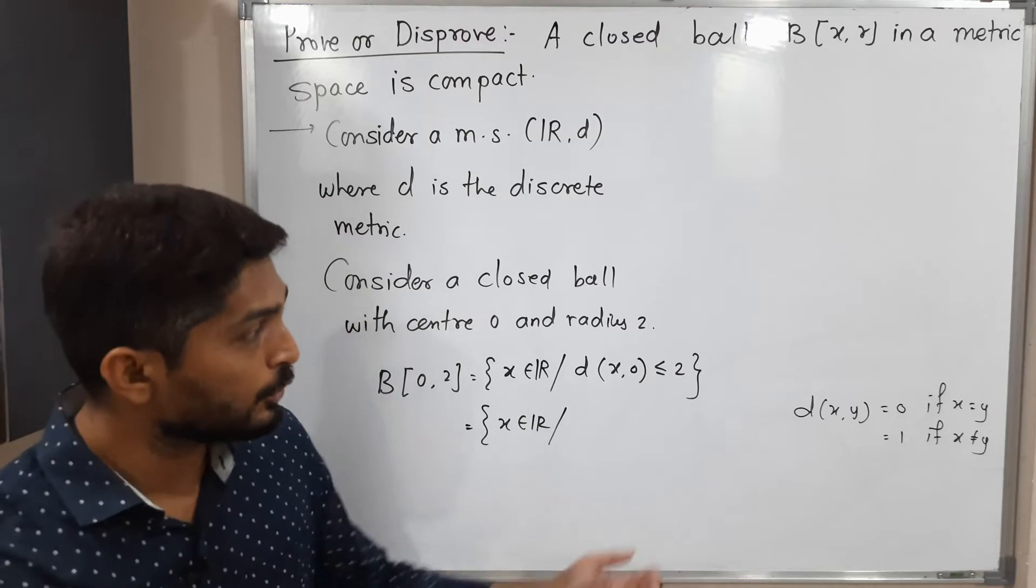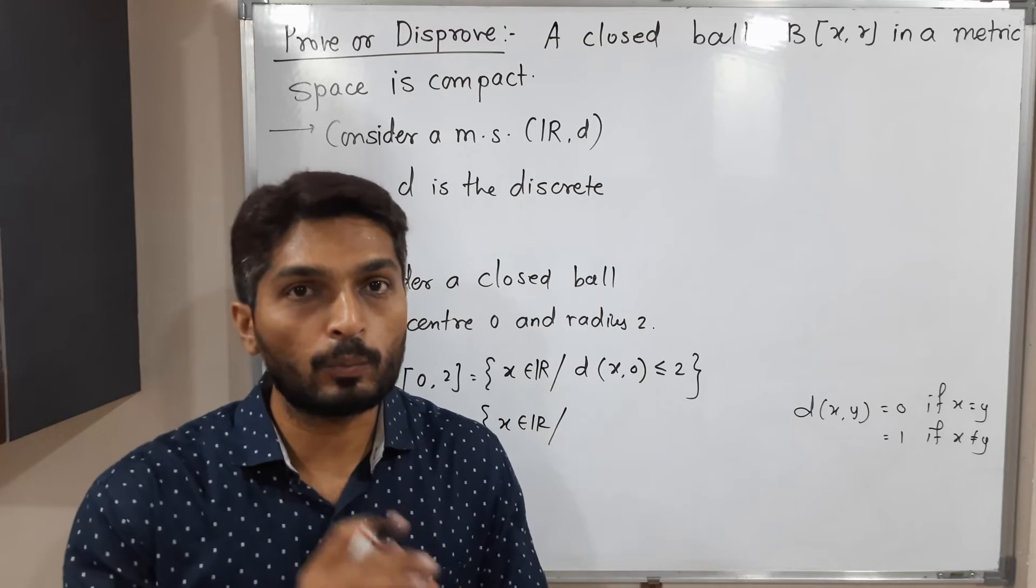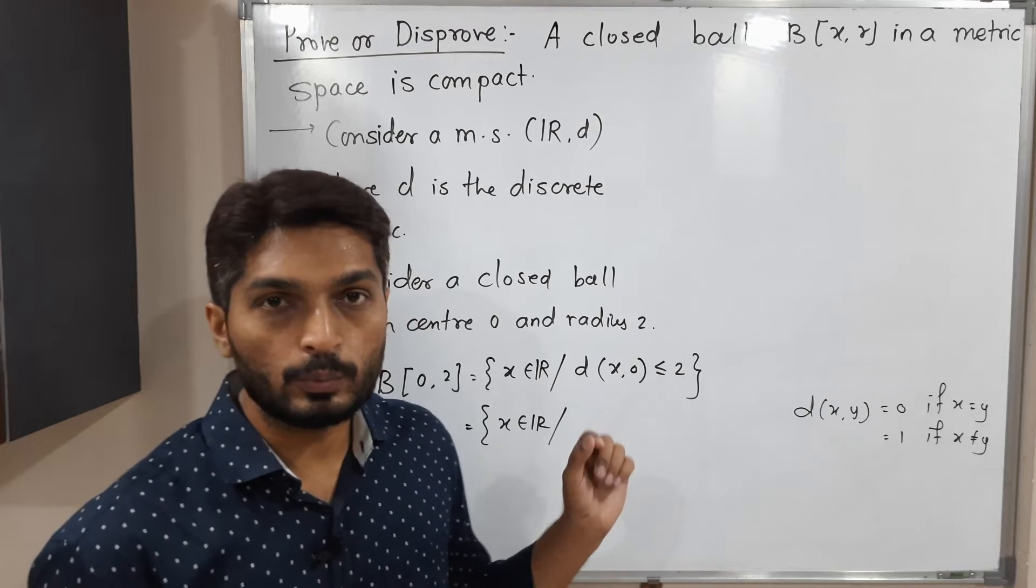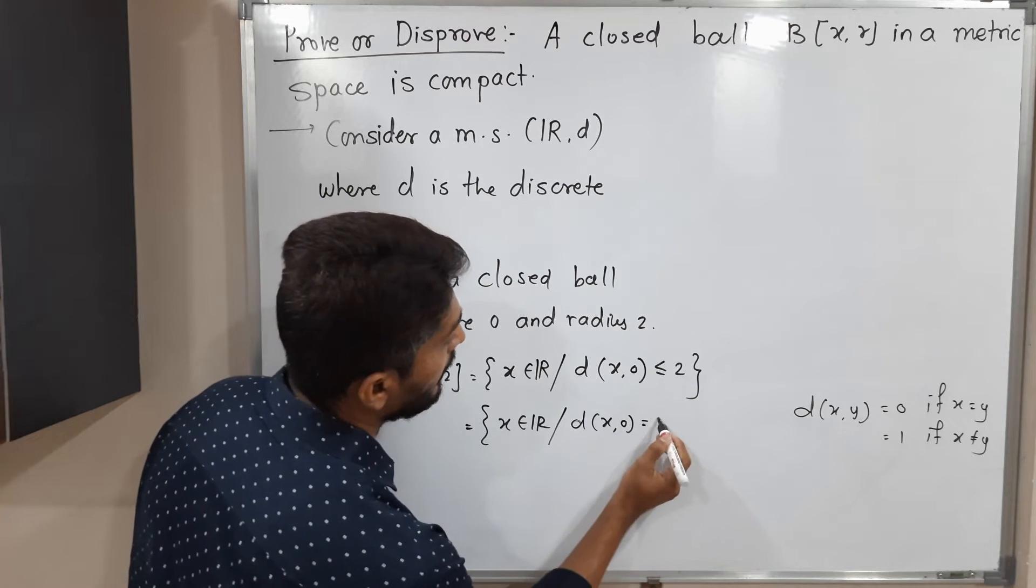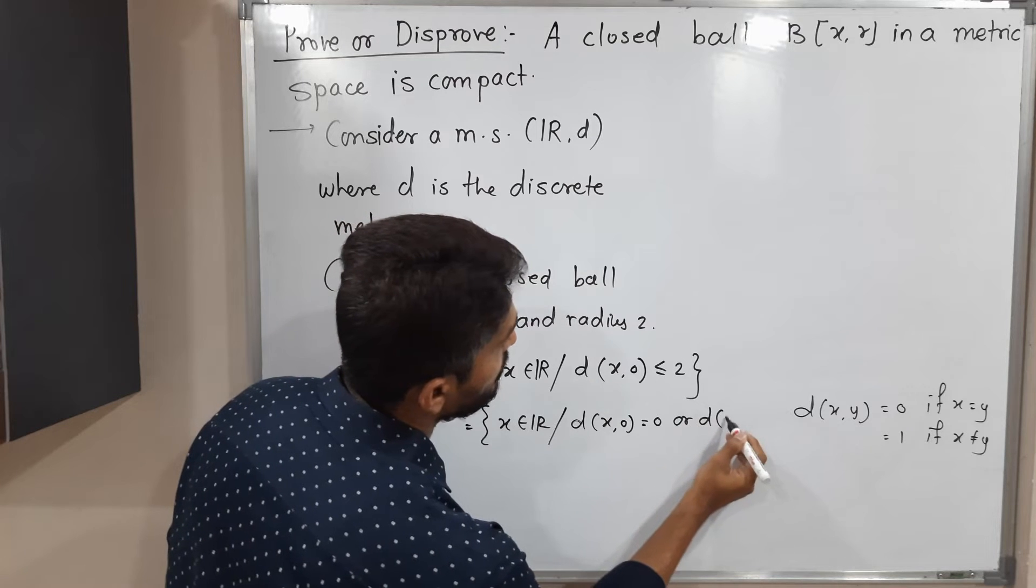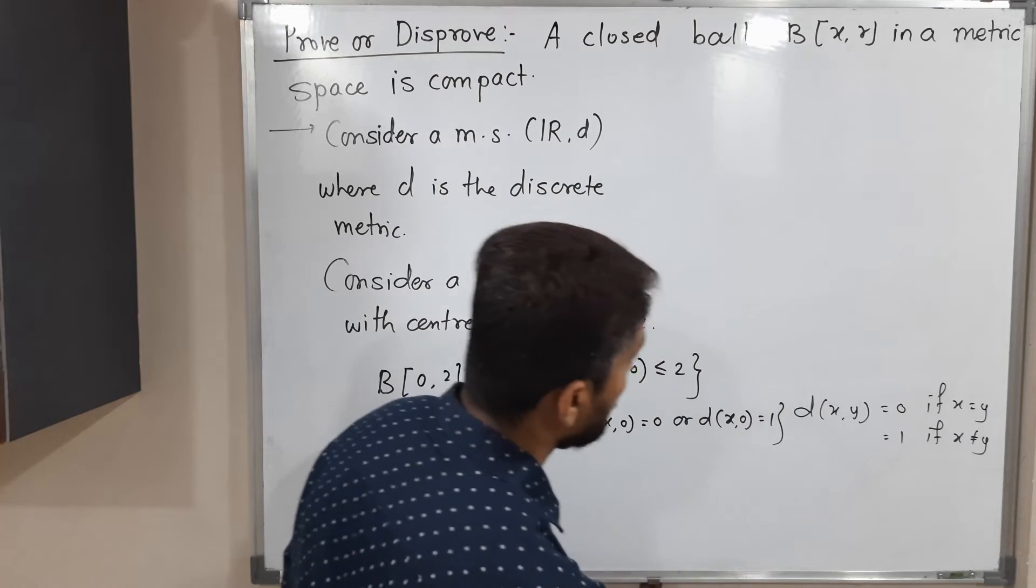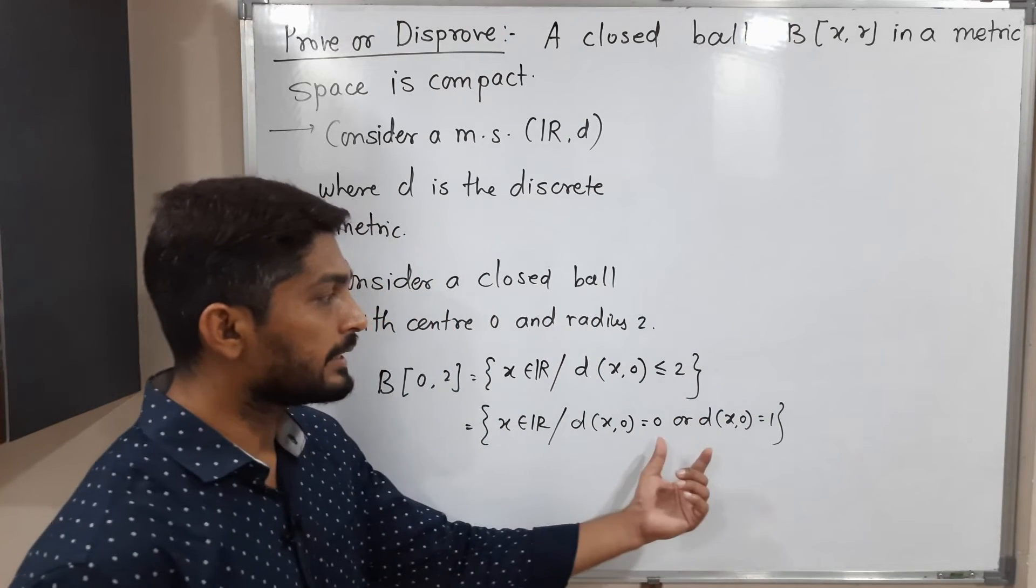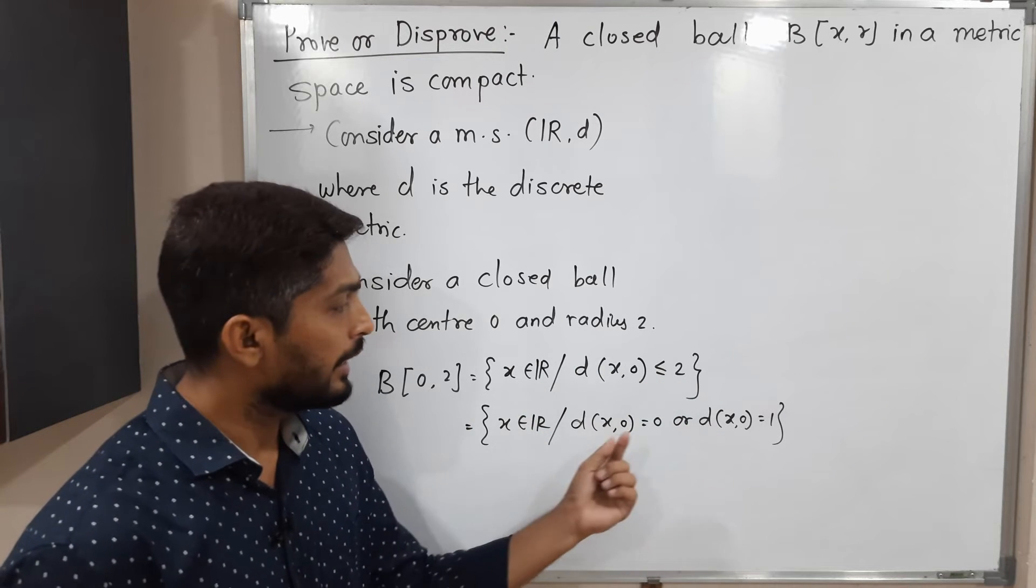By definition we can write this equals {x ∈ R : d(x,0) ≤ 2}. But as you know, in the discrete metric there are only two distances: 0 and 1, and both distances are less than 2. So d(x,0) can be 0 or d(x,0) can be 1. Both possibilities are possible.